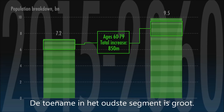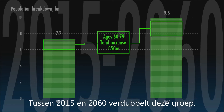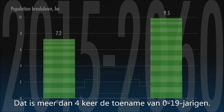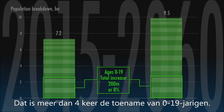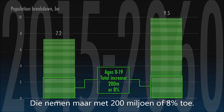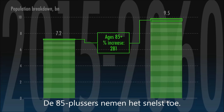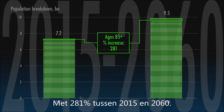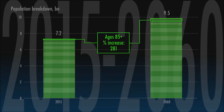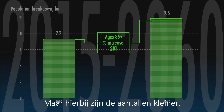The increase in the last, oldest segment is especially marked. Between 2015 and 2060, the number of 60 to 79-year-olds will double to 850 million. That's more than four times the increase in the number of children and teenagers, which will rise by only 200 million, or 8%. The numbers of the oldest people of all, those above 85, will rise at the fastest rate, by 281% in 2015 to 2060, but from a much lower base, so they do not add as many people to the total.